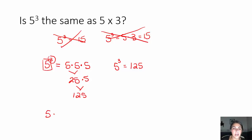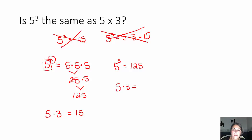5 times 3, on the other hand, is 15. It means 3 groups where there's 5 in each group: 5, 10, 15. 5 times 3 is 15. 15 and 125 are certainly not the same. Therefore, 5 to the third is not the same as 5 times 3, absolutely not.